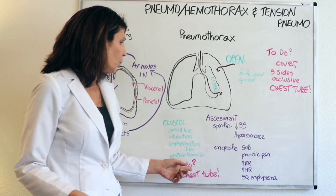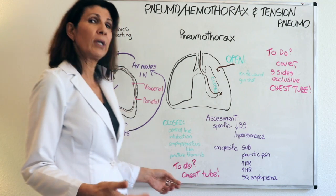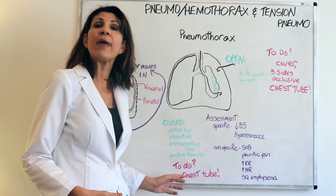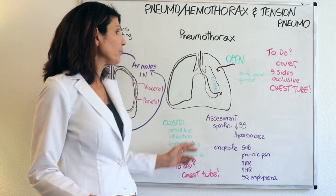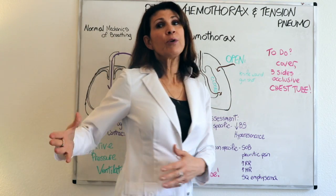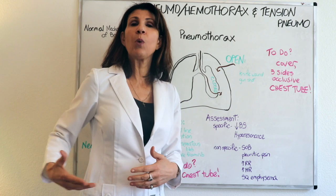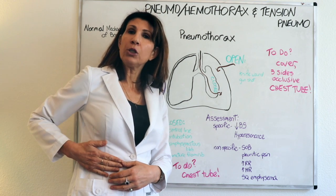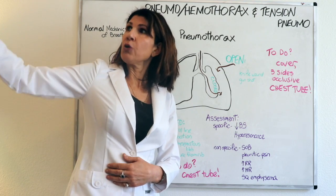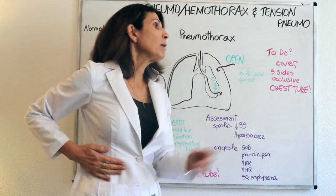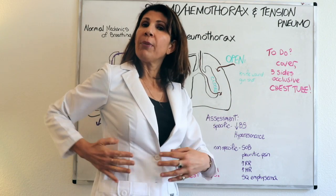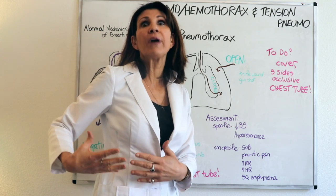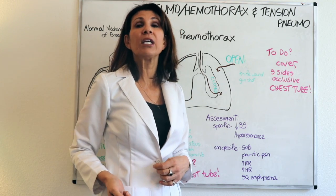What do we do about it? With a closed pneumothorax, we look at chest tube insertion and how that resolves the problem. For an open pneumothorax, you also eventually put in a chest tube, but you first have to cover the wound on three sides with an occlusive dressing. Why three sides? So no air from the atmosphere can get into the chest wall, but air is still able to come out of the pleural space — preventing development of a tension pneumothorax.